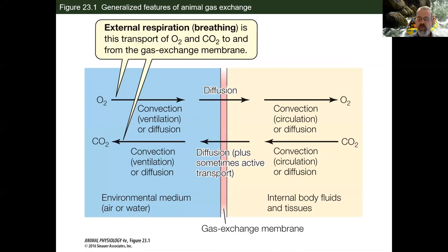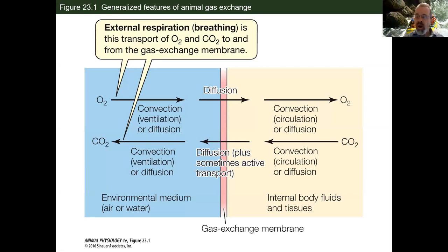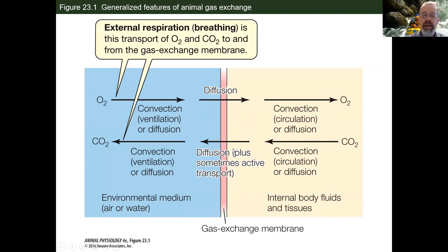We're going to talk about the respiratory system — a real comparative discussion, much like the cardiovascular system was. Generally, with respiration, one of the things it involves is the movement of respiratory gases from one medium to another — whether it's from the air into the blood, from the blood to the tissues, or from the tissues back into the blood and out into the air. All that movement of gases depends primarily on diffusion, moving from a high concentration to a low concentration.